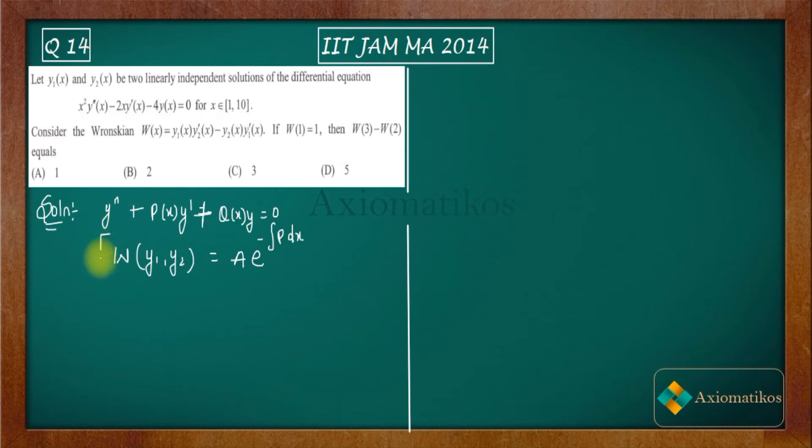the most important note for this question: you can write your Wronskian in terms of p, which is given to you. I will repeat this note again. Suppose we have a second order homogeneous differential equation. Then we can find out the Wronskian of linearly independent solutions of this differential equation, and it is given by this formula. This formula will be very helpful for us.